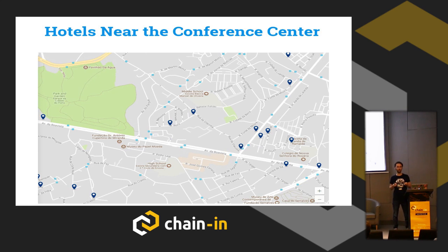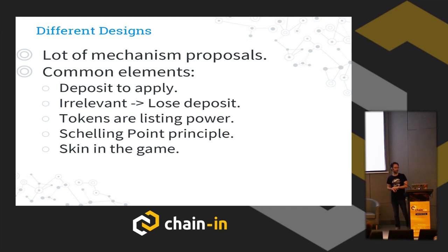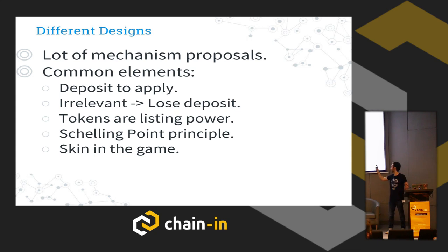We saw that a lot of problems in internet applications and in future decentralized applications are listing problems. There have been a lot of proposals for making curated lists, but most of them have in common that you need a deposit to apply. If you ask to list an irrelevant item, you lose your deposit. Some particular token gives listing power, and the token holders of those tokens can decide if your item should go in the list or not.